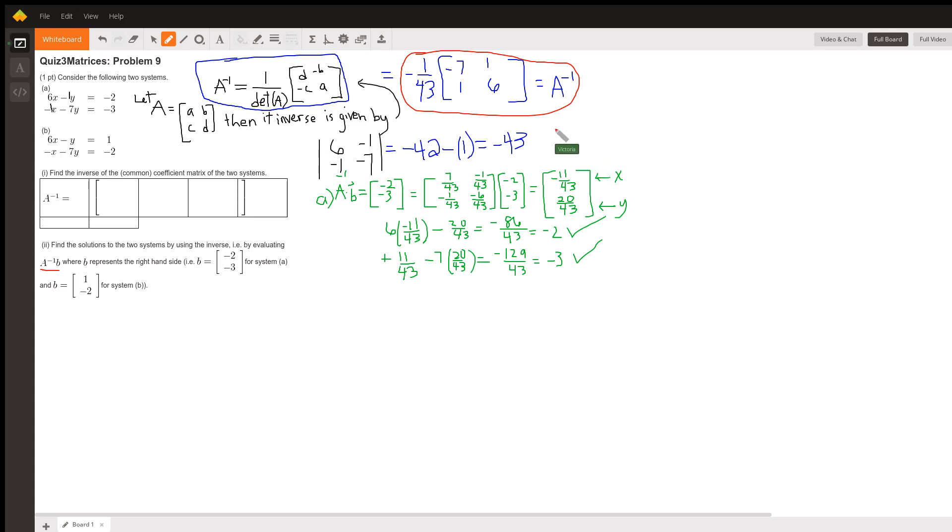I'm not sure if your teacher wants it in point form, but if your teacher does, it will be negative 11 over 43 is the x coordinate and 20 over 43 for y. I kind of have a feeling that's what your teacher is going to want. Now let's do it again for B, and we'll do this one in purple.